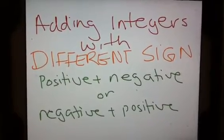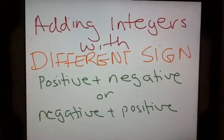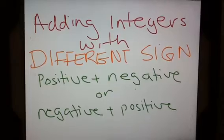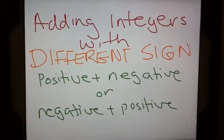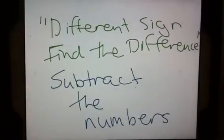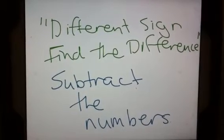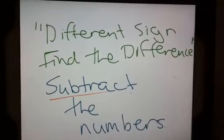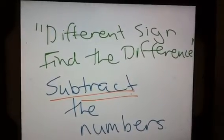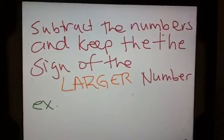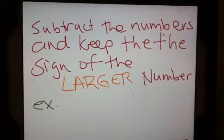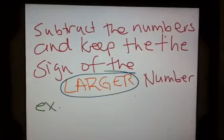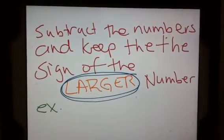When we add integers with different signs — so when you have a positive plus a negative, or a negative plus a positive — it's a little different. Different signs: find the difference, meaning subtract the numbers, and keep the sign of the larger number.